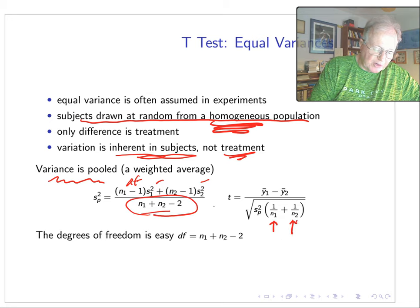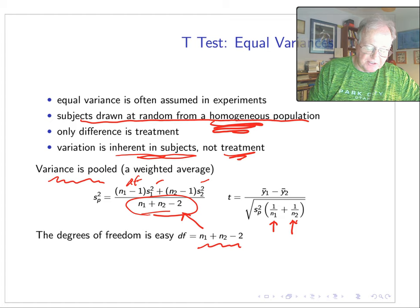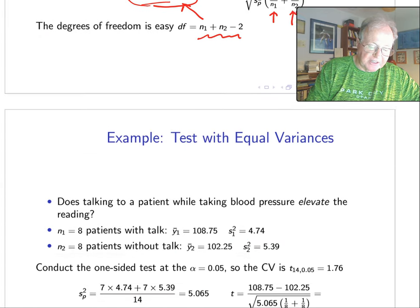Degrees of freedom for the overall test is easy. It's the denominator in the pooled variance, so it's the sum of the sample sizes minus two. Let's look at an example.